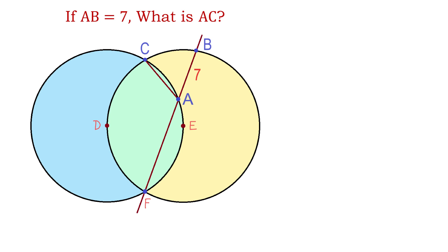If a line passes through the points F, A and B and the line segment AB is 7 units, then what is the line segment AC?